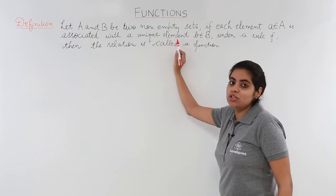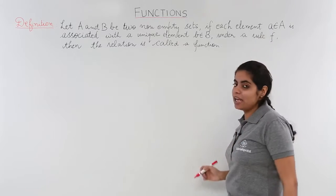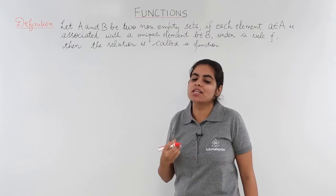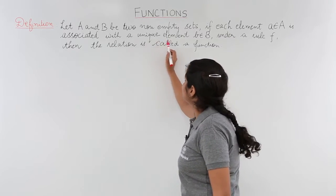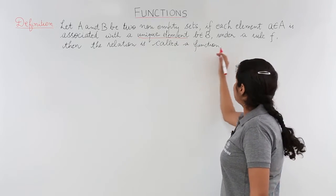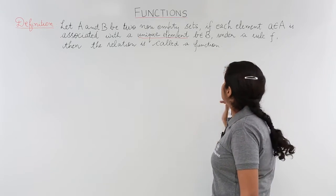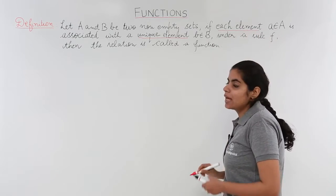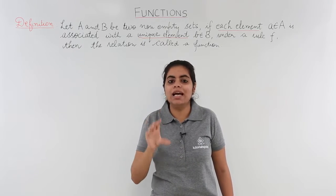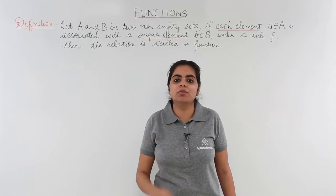Let A and B be two non-empty sets. Each element 'a' belonging to A — meaning if capital A is a set, the elements are denoted as small 'a' — is associated with a unique element. I underline the word 'unique' as this is important. That unique element 'b' belongs to B under a rule, then the relation is called a function. So all elements of the first set A should be associated with unique elements of B.